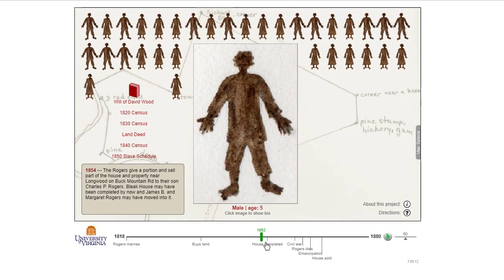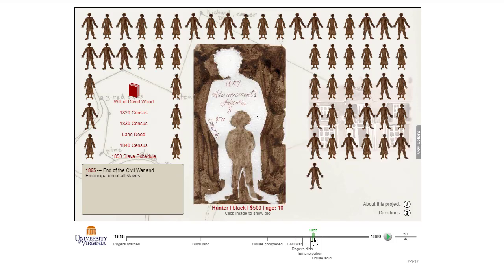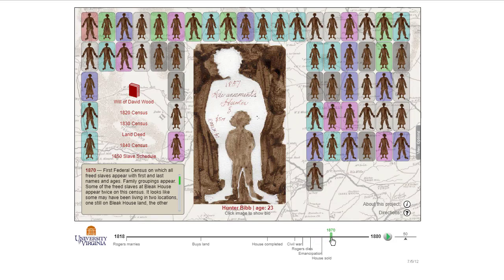What's interesting is as time goes on, we start to know more. We know their race at this point, we know their age. Now we start getting around 1865 because post-emancipation, we get to know their names, and what they were, how much they had paid from some wills that she'd found. And then as you go through, you get last names.